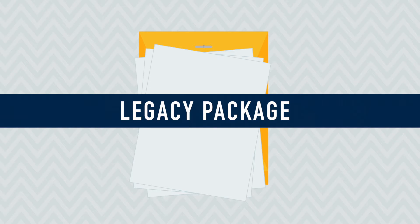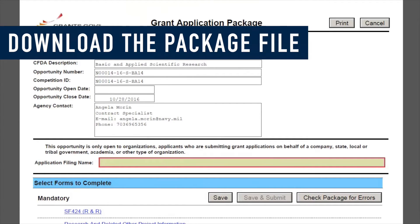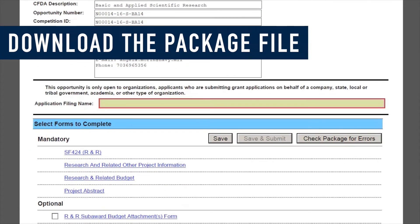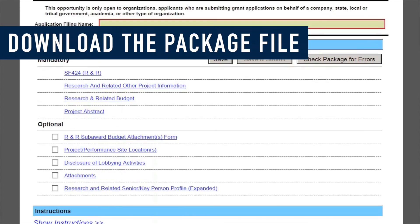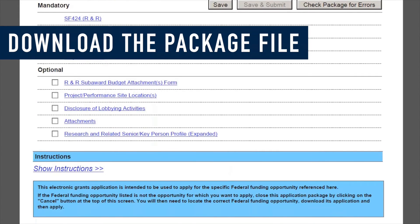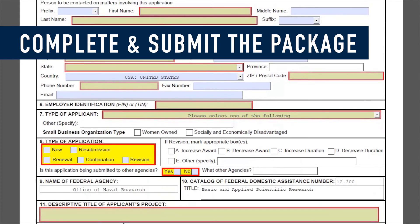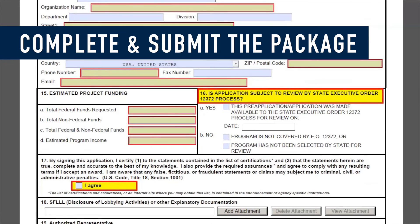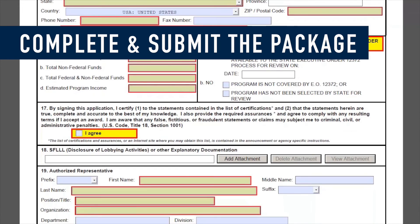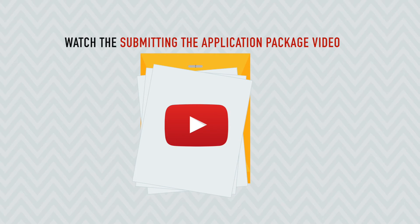Applicants may also choose to apply using the old method, sometimes called the Legacy Package, by downloading the entire PDF package as one large file. After filling out the entire form offline, you can then upload the file directly to Grants.gov. See the Submitting the Application Package video to learn more.